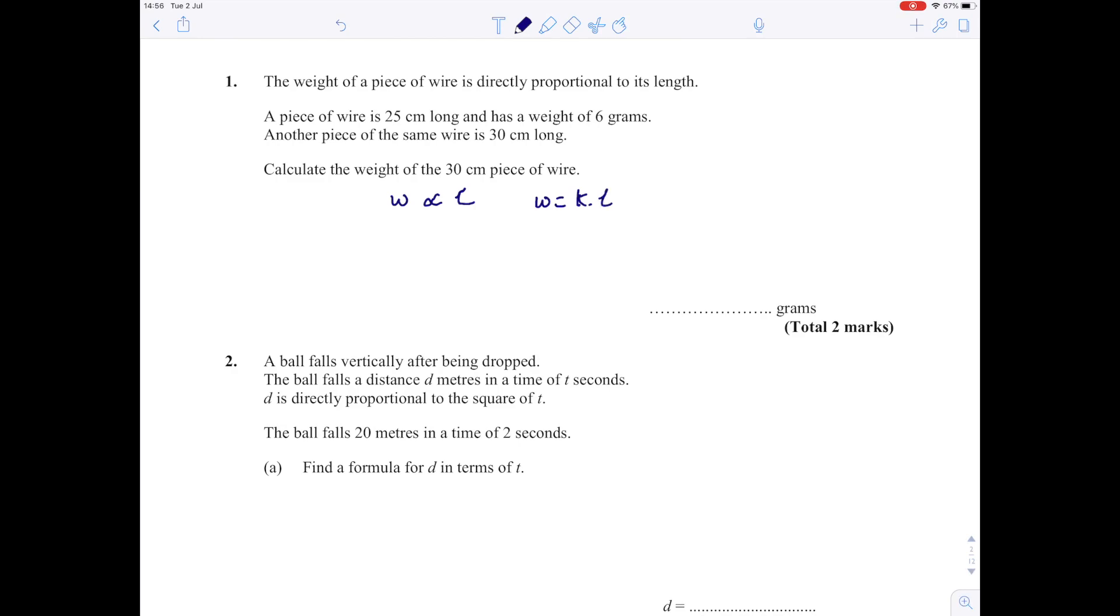The first step is to find the value of k. To find that, we need a corresponding pair of values. We know that when the wire is 25 centimeters long, the weight is 6. Substituting those values in: 6 is k times 25, so k is 6 over 25.